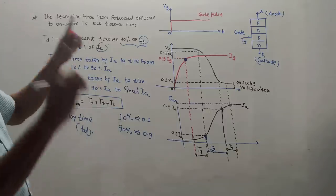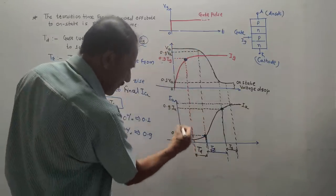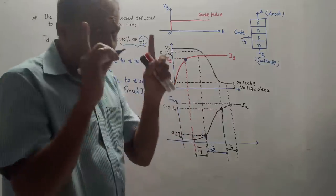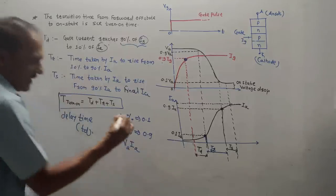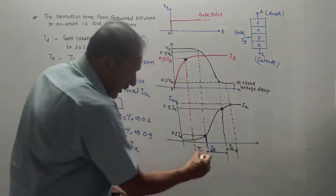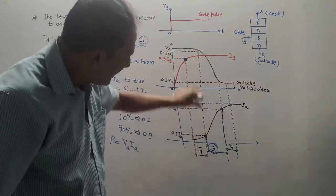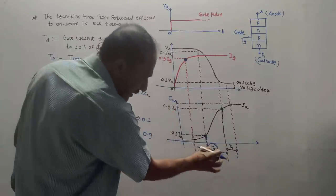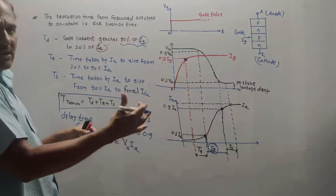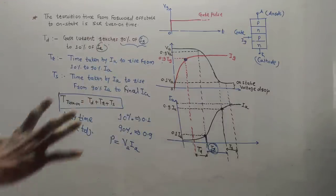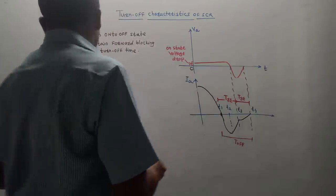One more important thing: if you observe the graph of VA (anode voltage) and IA (anode current), power loss is related to the basic equation P = V × I, which in this case is VA × IA. During the rise time tr, both the values of VA and IA are larger compared to other regions. Therefore, power loss during the rise time period is more compared to other regions. This completes the turn-on characteristics of SCR.